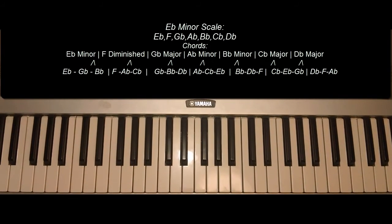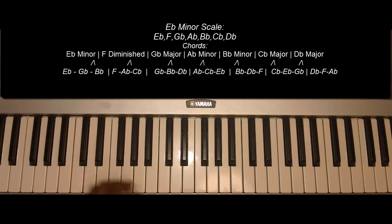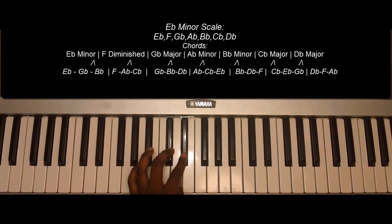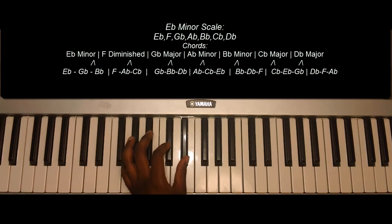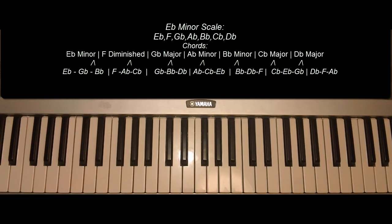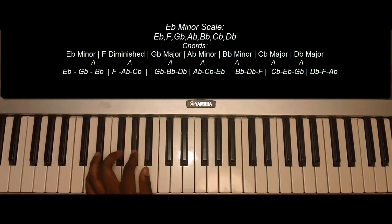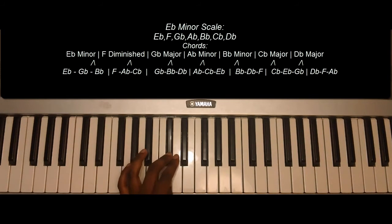The E-flat minor scale. The notes of the E-flat minor scale are as follows: E-flat, F, G-flat, A-flat, B-flat, C-flat, D-flat, and E-flat.